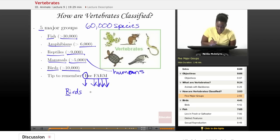The F in FARM is going to stand for fish. The A stands for amphibians. The R stands for reptiles. And the M stands for mammals.